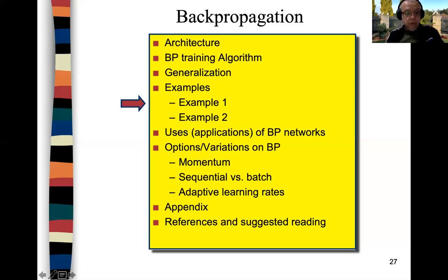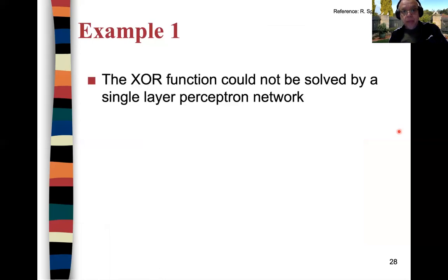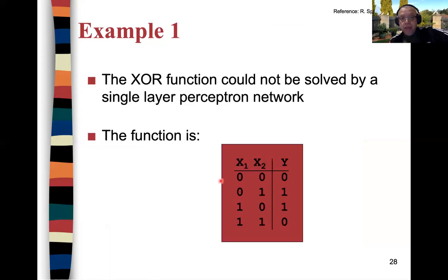Let's now look at a simple example using the backpropagation algorithm, using the formulas we've seen before, and then we'll apply it to a simple case: the XOR function. We saw that we could not solve it using a single layer perceptron network, so now we're going to use a multi-layer perceptron. The XOR function takes inputs X1 and X2, and it is one when the two inputs are different.